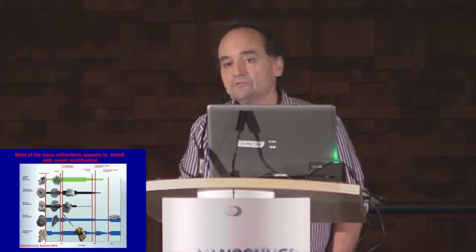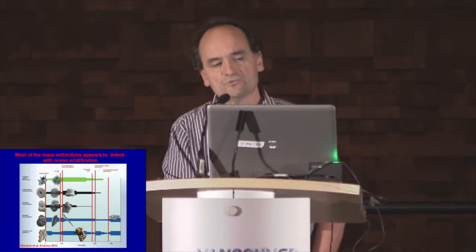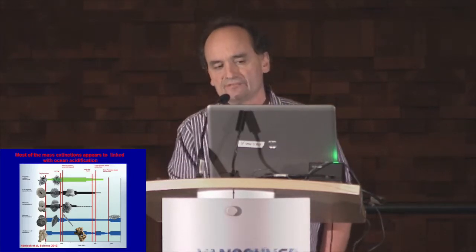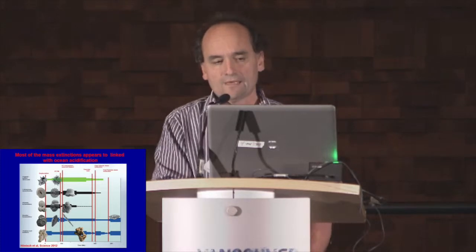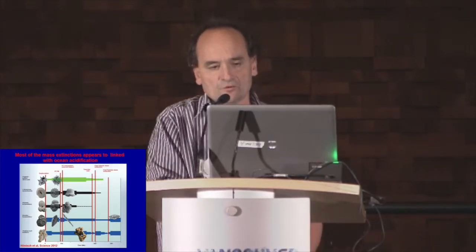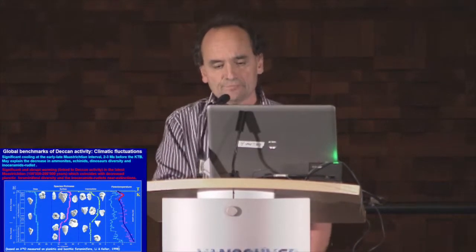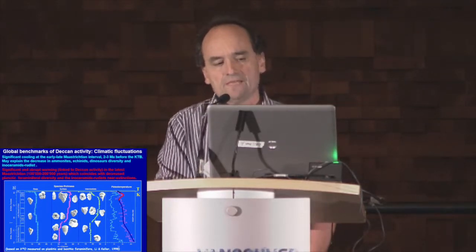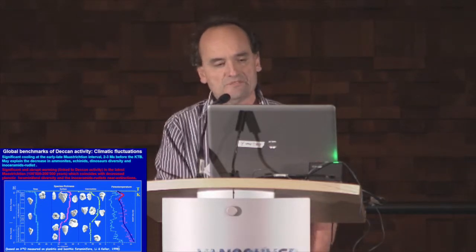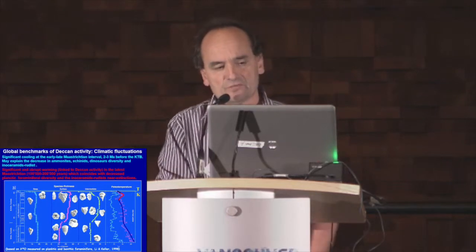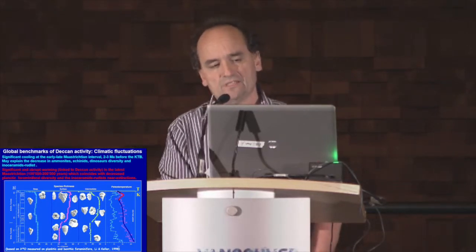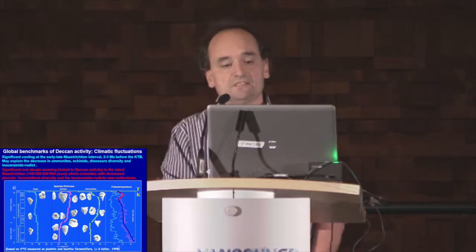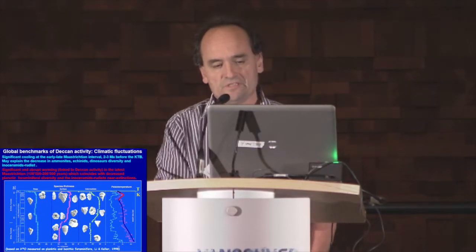For the last part of my talk, I want to show some global benchmarks of Deccan trap activity outside India, and then benchmarks within India. We have a huge climatic fluctuation: first, a significant cooling at the early-late Maastrichtian interval, which probably caused a decrease in organism diversity; afterwards, in the latest Maastrichtian, we have a significant and abrupt warming clearly linked to Deccan trap activity, coinciding with a decrease in planktic foraminifera diversity and near-extinction of inoceramids and rudists.